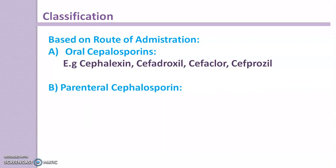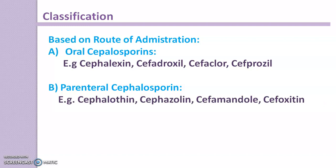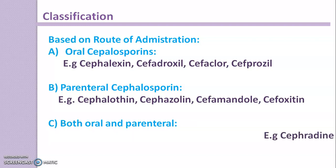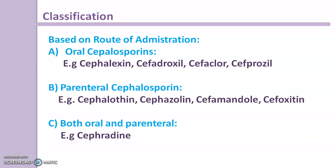Cephalosporins administered by the parenteral route are called parenteral cephalosporins. Examples are Cephalothin, Cefazolin, Cefamandole, and Cefoxitin. There is one example which can be administered by both oral as well as parenteral route, and that is Cefradine. You have to remember that Cefradine can be administered by both oral and parenteral routes.